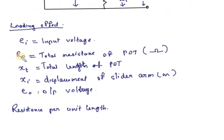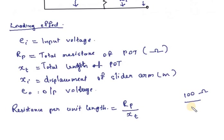Total resistance per unit length is RP divided by XT.